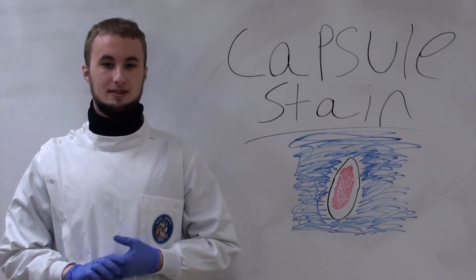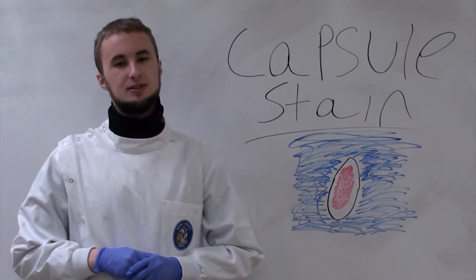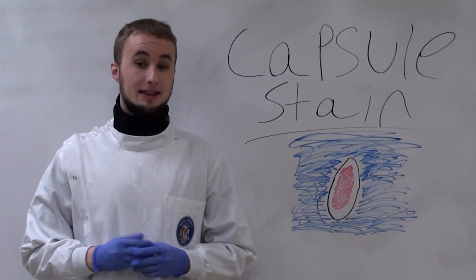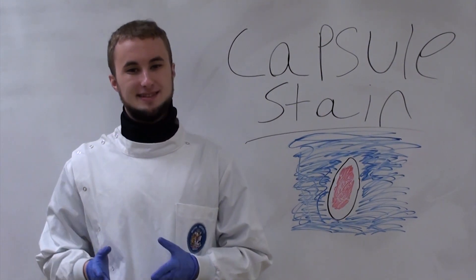Alright, so this time we're going to be talking about the capsule stain. As you've probably noticed from looking at this drawing, it looks really similar to the negative stain. And that's because it is. A capsule stain is basically a mixture between the negative stain and a simple stain.